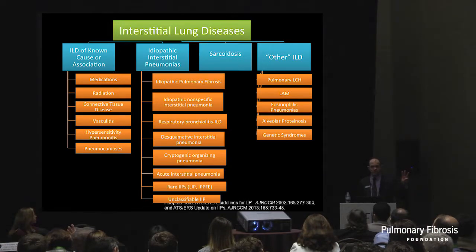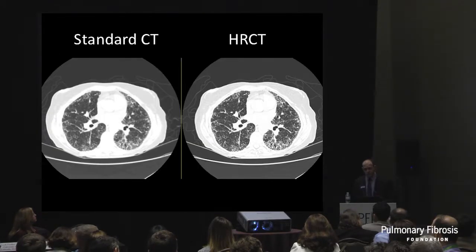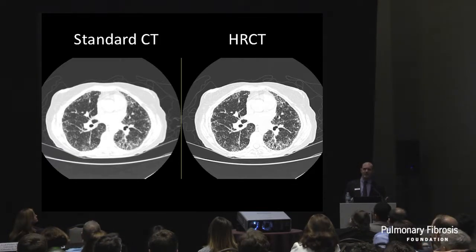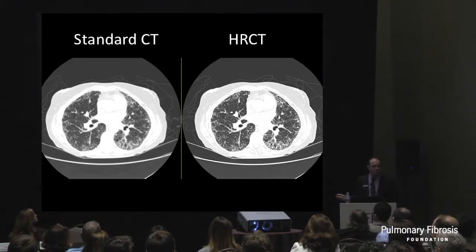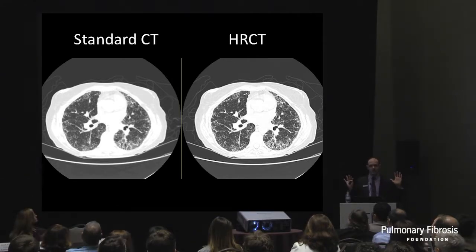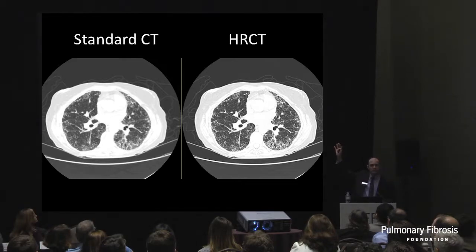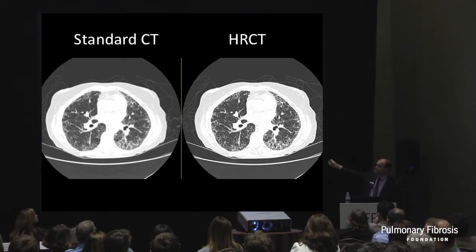Those are two really important things: 75% come down to three diagnoses, and you shouldn't try to sort out the IIP patterns — that's not your job. You're going to hear a whole talk on high-resolution CT, but I love this slide. This is the same patient, same scan, same slice, same window settings. The one on the left uses a standard kernel reconstruction; the other uses a high-kernel or high-frequency resolution algorithm. They give different information. Talk to your radiologist — make sure you're getting high-res CTs.